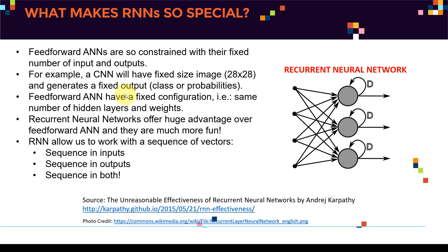That's actually very basic, because us humans can see basically anything — we can feed in whatever input, a series of inputs. We have a lot of flexibility in the input, and most importantly in the output as well. A CNN has a fixed size input image, say 28 by 28, and generates a fixed size output such as class probabilities. Feed-forward ANNs have fixed configurations — the same number of hidden layers and weights. Once our network is trained, it's fixed. There's no dynamics in there and it doesn't capture time. So you are constrained in the input, constrained in the output, constrained in the architecture, and you do not capture time.